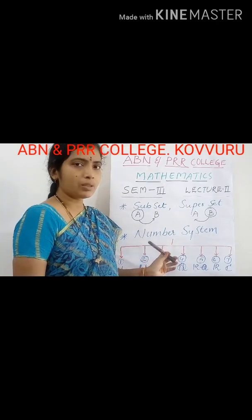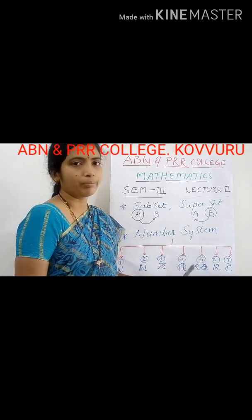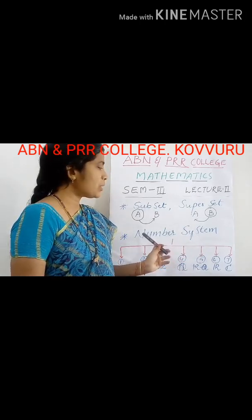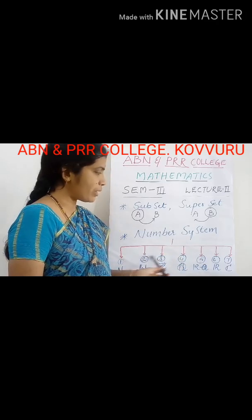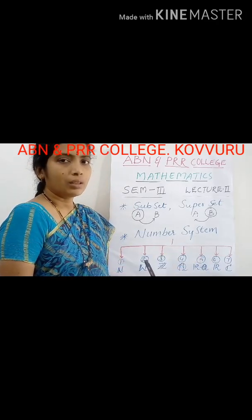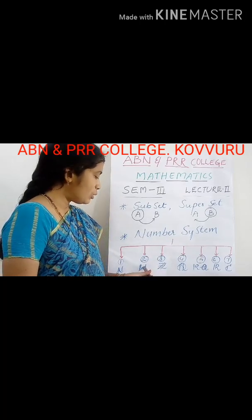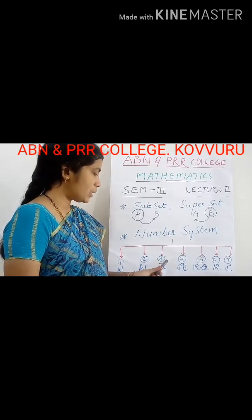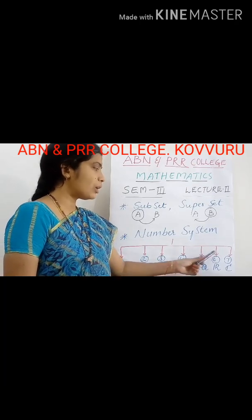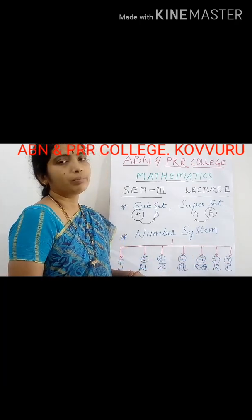The next concept for today is the number system. Generally, the number system is classified into seven kinds: natural numbers, whole numbers, integers, rationals, irrationals, reals, and complex numbers.